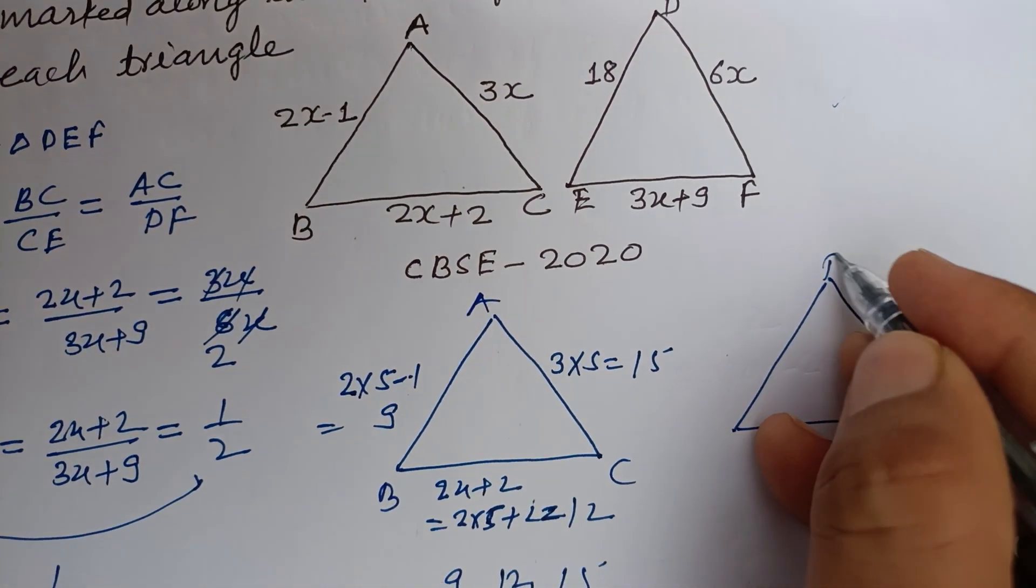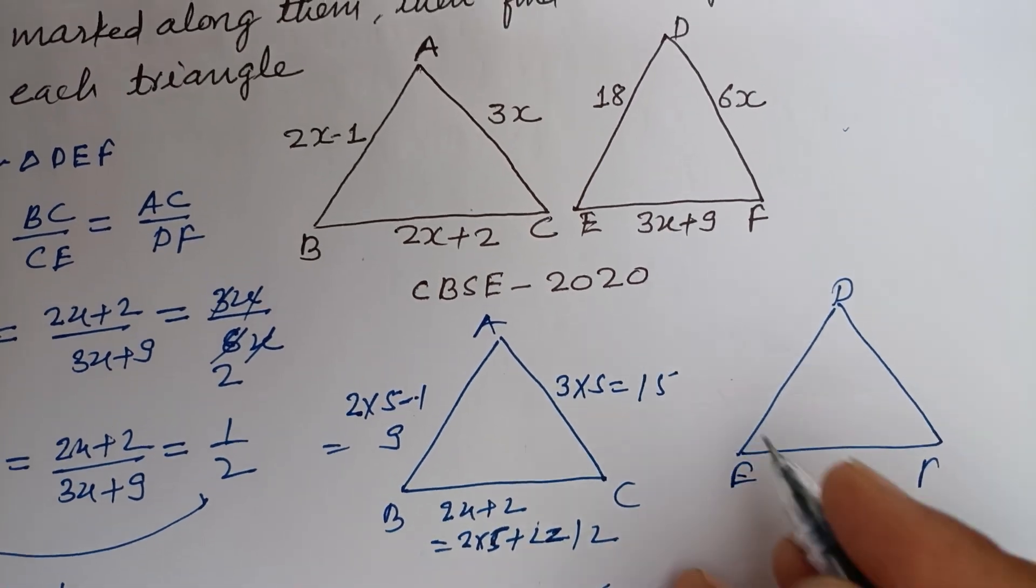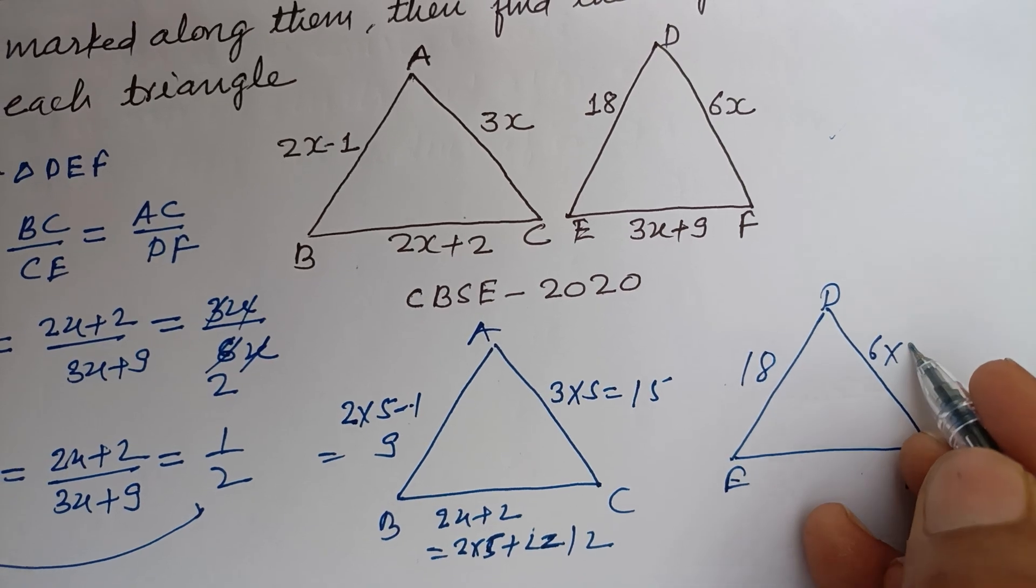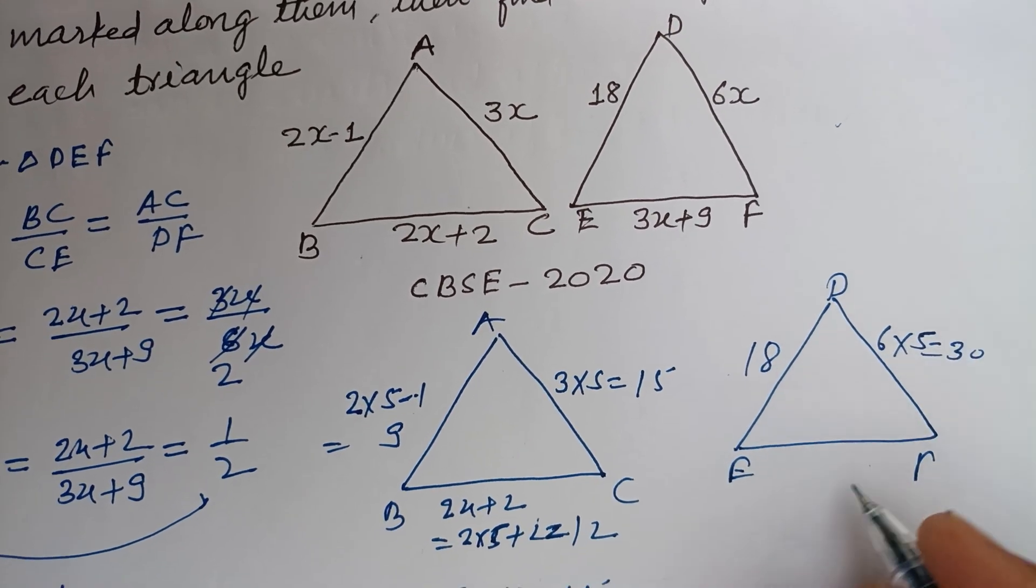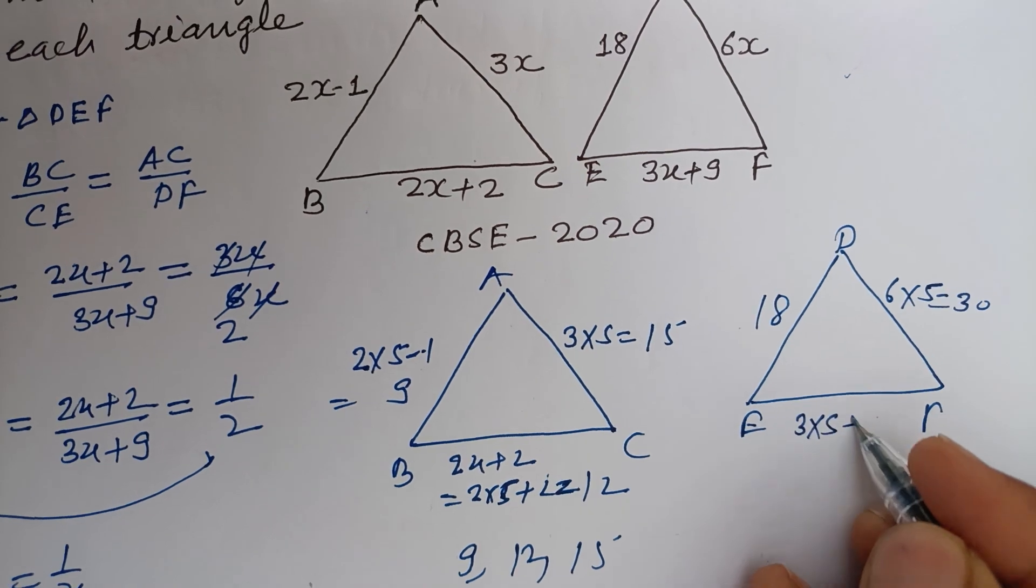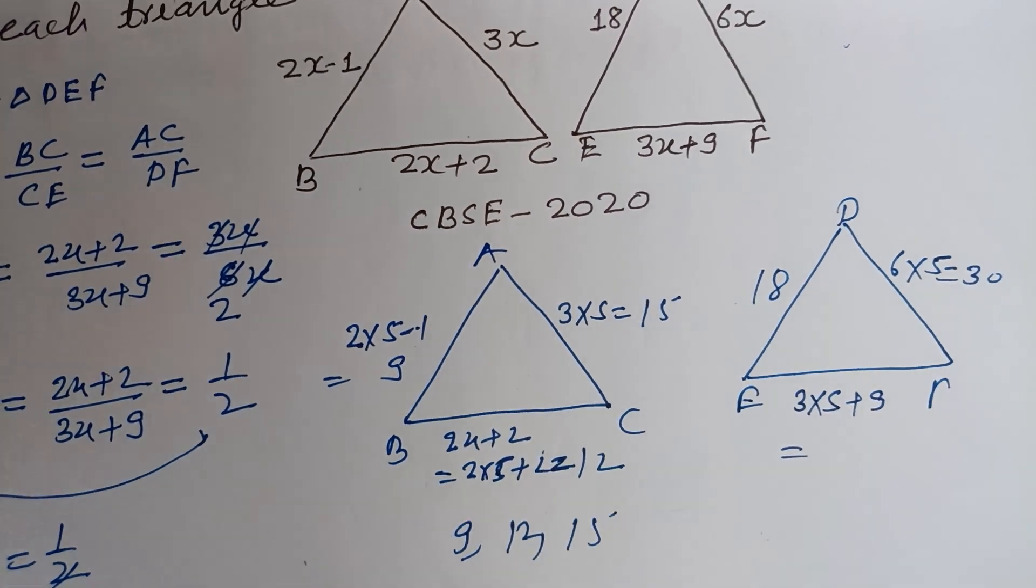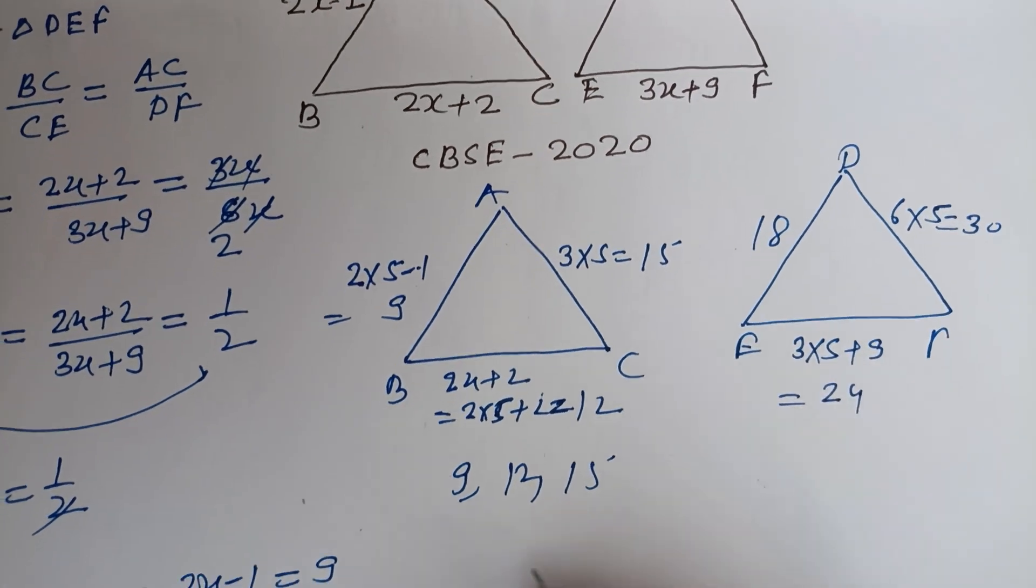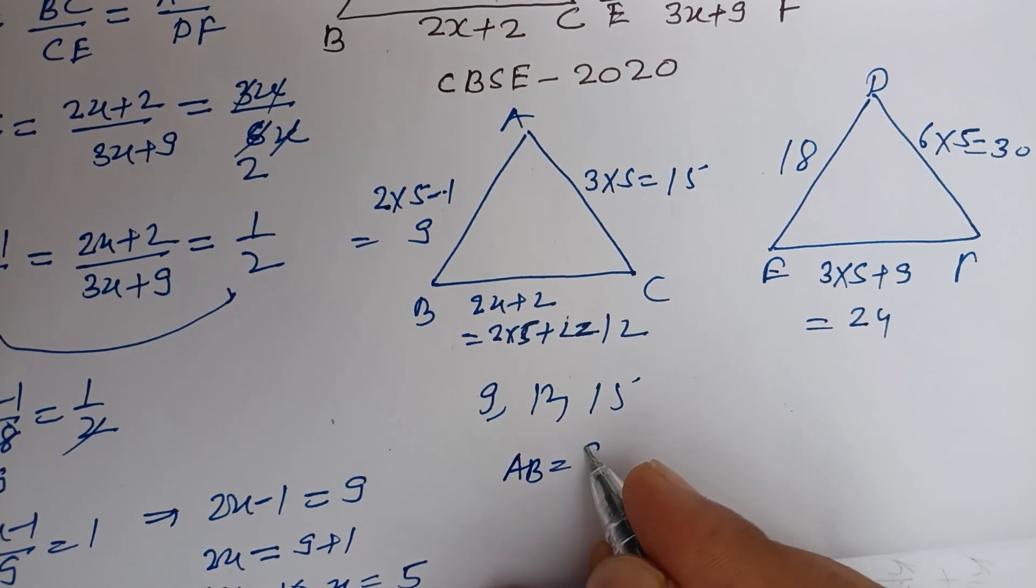Now DEF is, when we put x equal to 5, this is 18, this is 6 into 5, this is 30. And this is 3 into 5 plus 9, 3 times 5 is 15, 15 plus 9 is 24. So AB is 9, BC is 12, CA is 15, DE is 18.